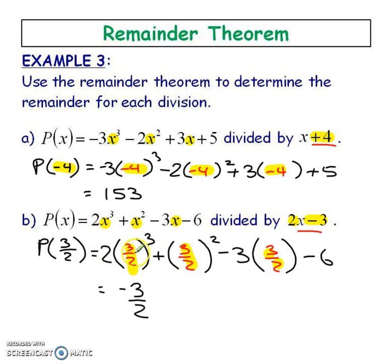So 2x cubed plus x squared minus 3x minus 6. Once you've subbed in the 3 over 2's make sure that you do that right there in the front as well and then you're going to figure out your answer and this would have been your remainder had you done the long division.